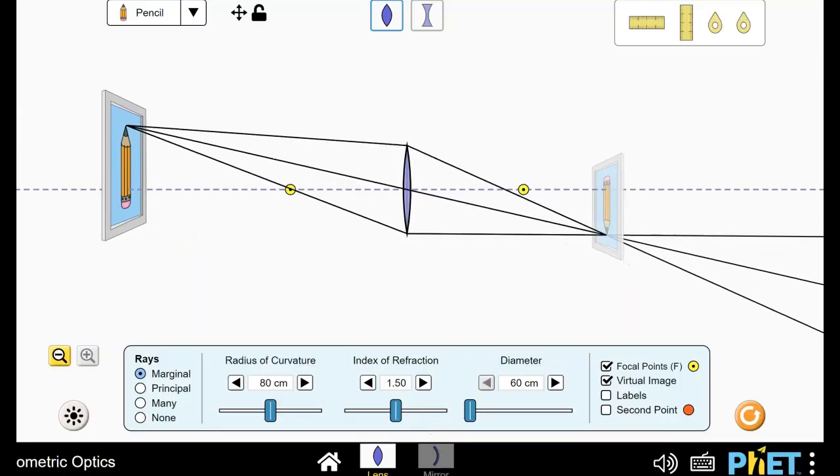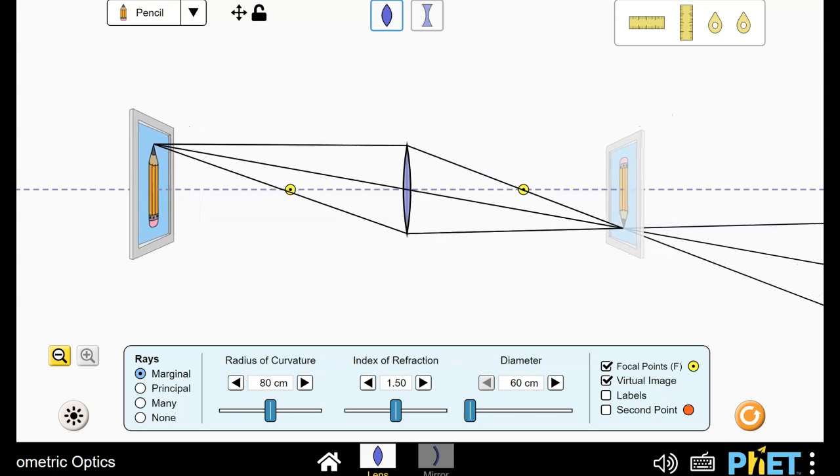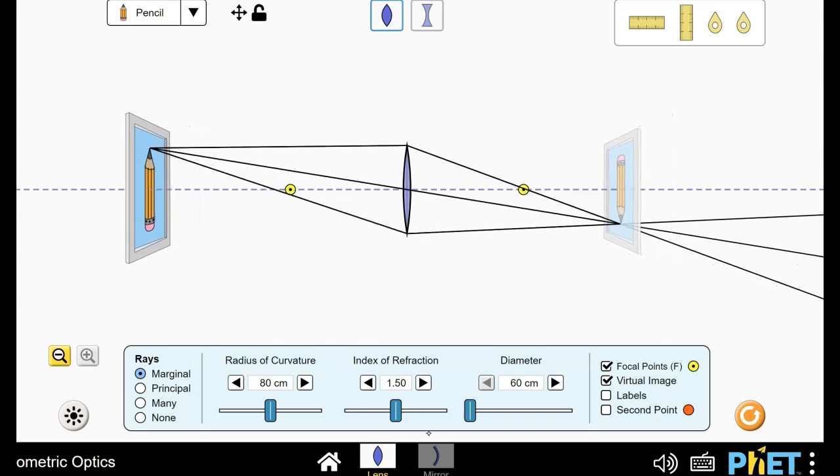Here's a lens simulation from PhET and you can see the three simple lens rules. Number one, rays that are parallel to the axis bend through the lens until they go through the focal point.